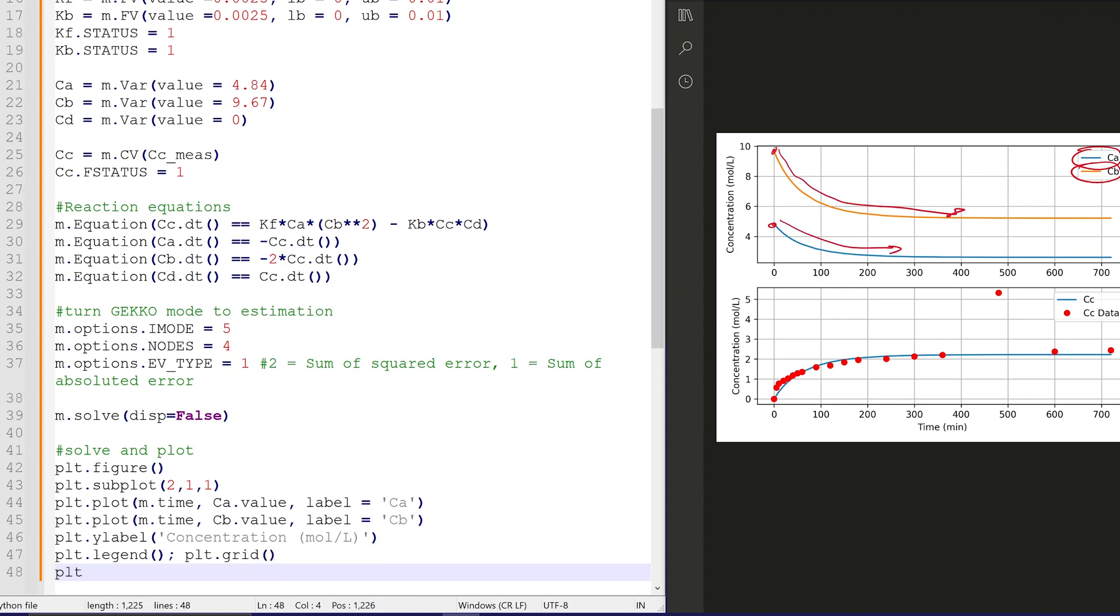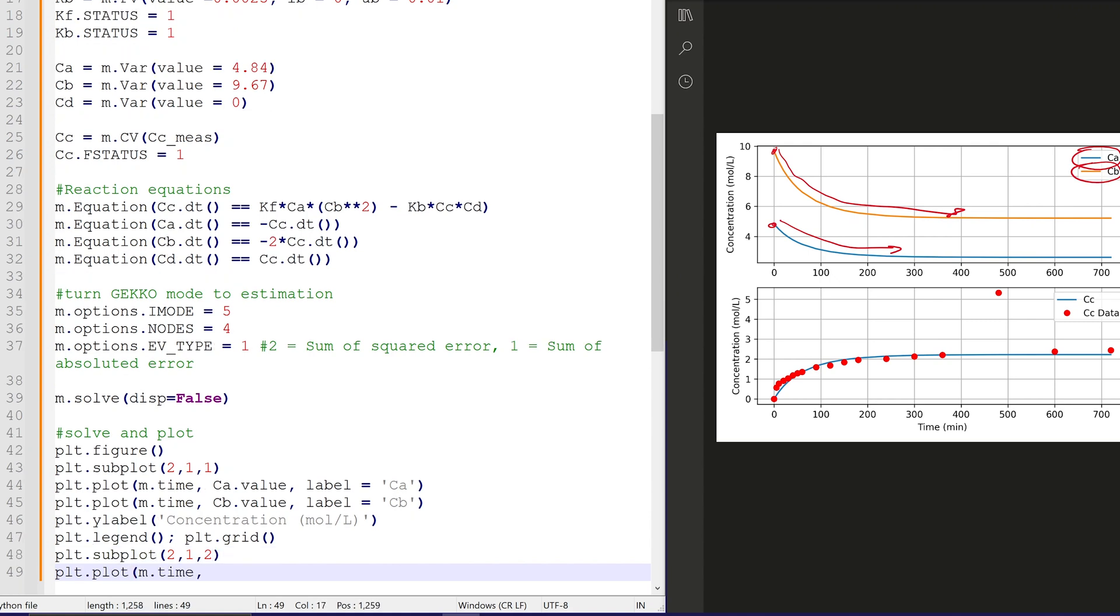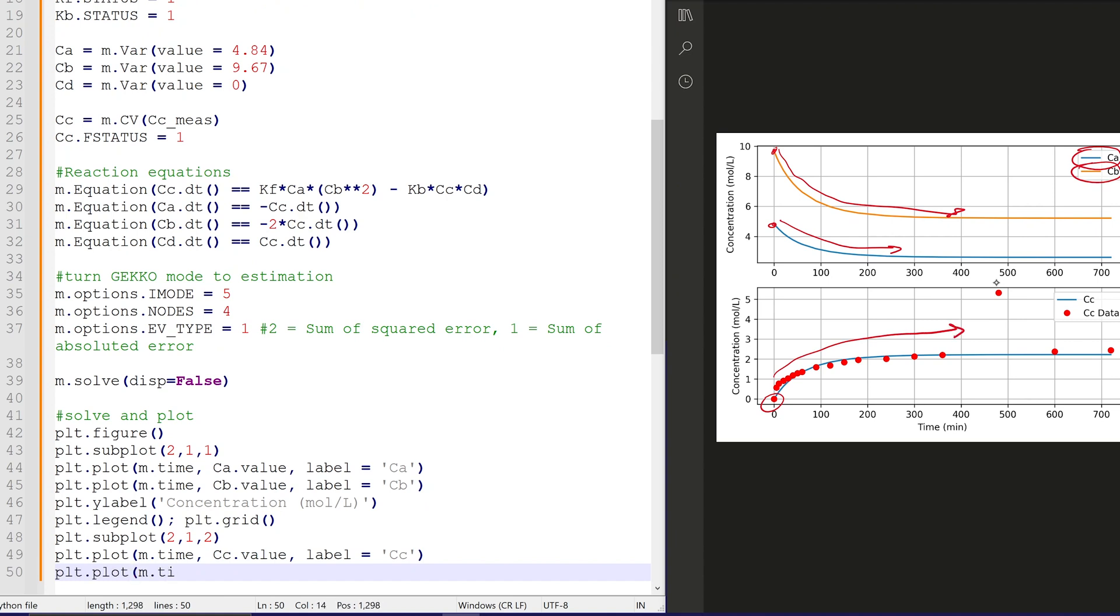And I'll put those on the top subplot. And we'll just go ahead and label those with our Y label. That's our concentration. And there we can see the time evolution. We initially mix those, and you can see them react to form C, and they'll also form D as well.